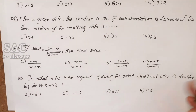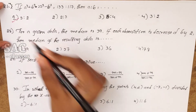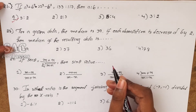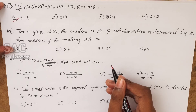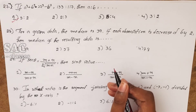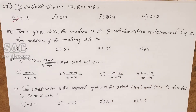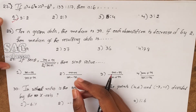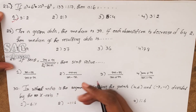Problem 28: for a given data the median is 39. If each observation is decreased by 2, then the median of the resulting data is also decreased by 2, giving 37.